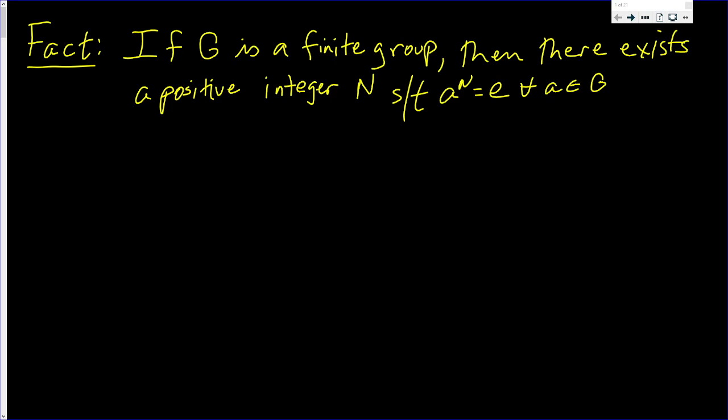In this video, I'm going to prove a very interesting fact. If G is a finite group, then there's a special positive integer N such that A to the N is equal to E for all the A's in the group G.